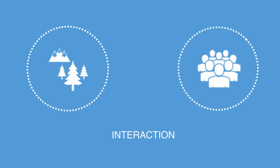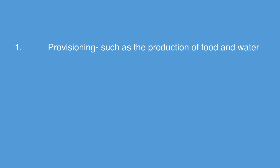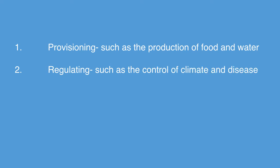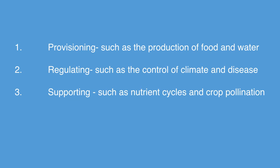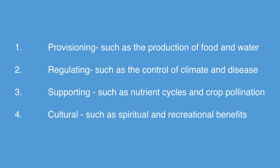The interaction between these two systems involves the exchange of energy, matter, and information. Human society and economy is deeply dependent upon the natural environment, and this flow of natural resources of all kinds from the ecosystem to the economy is called ecosystem services. These include broad categories of services like provisioning such as the production of food and water, regulation such as the control of climate and diseases, supporting such as nutrient cycles and crop pollination, and cultural such as spiritual and recreational benefits.